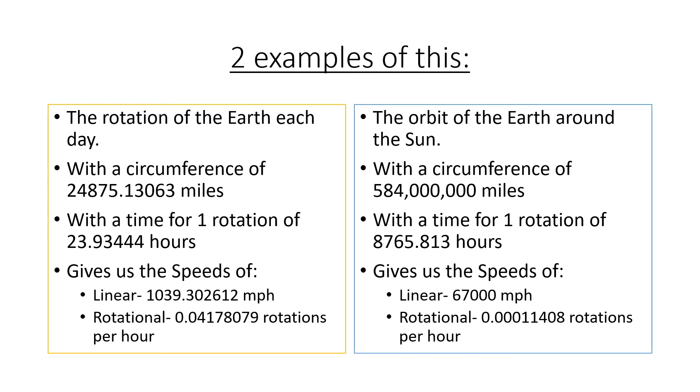The orbit of the Earth around the Sun, with a circumference of 584 million miles, with a time for one rotation of 8,765.813 hours, gives us the speeds of linear 67,000 miles per hour.